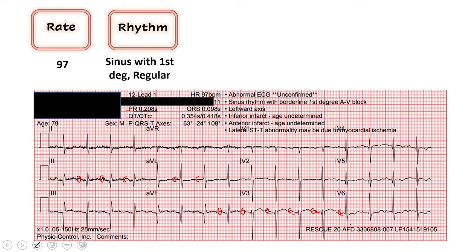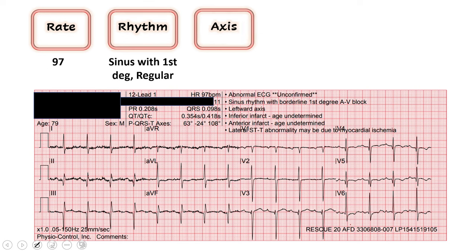Next we move on to our axis. We look at leads one and AVF. Remember we use our thumb — left thumb is lead one. The QRS vector is mostly up in lead one, so left thumb is up. AVF — the QRS vector here is mostly down, so our right thumb is down. We've got left thumb in the air, which gives us left axis deviation.